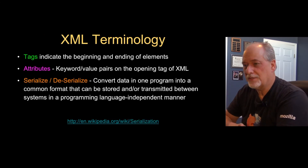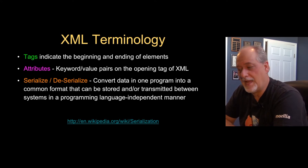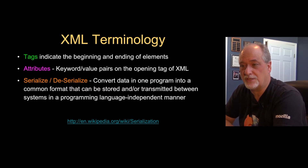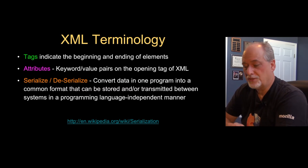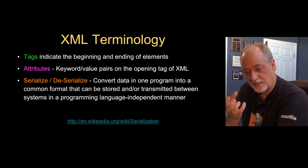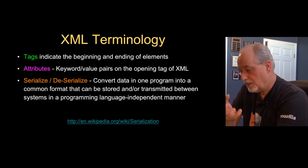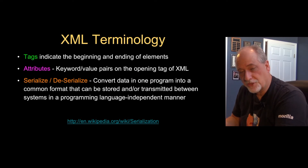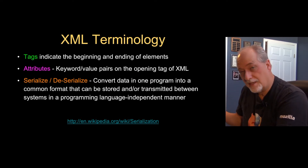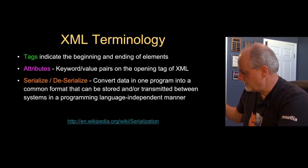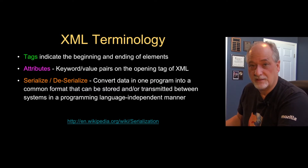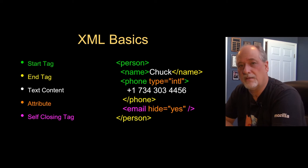Inside XML, we're going to talk about tags, attributes, and data. We've already talked about serialization and deserialization. Serialization is the act of taking data inside a computer in one programming language, setting it up for transport, transporting it across, and then taking it back apart and turning it back into the data in whatever internal format it needs to be in the destination system.